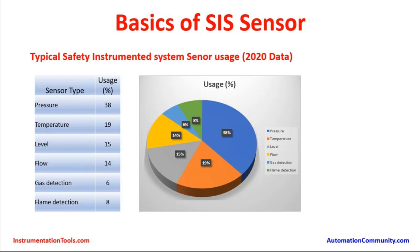Temperature sensors are around 19 percent, level sensors around 15 percent, flow sensors around 14 percent, gas detection sensors like analyzer signals and gas chromatograph signals are around 6 percent, and flame detection system sensors are around 8 percent. Electrical signals are missing from this chart but are usually very negligible at about 1 percent. This is generic data across the industry for safety instrumented system applications.